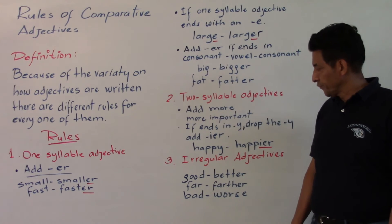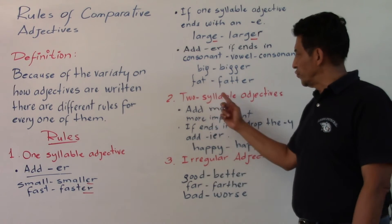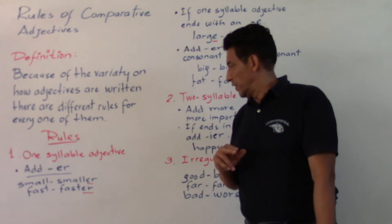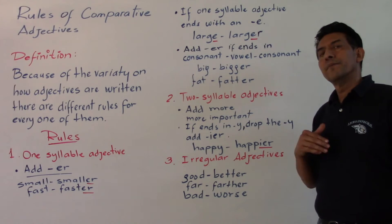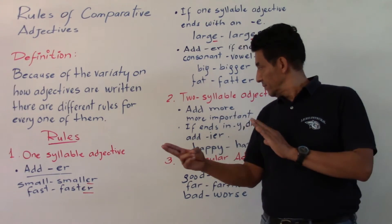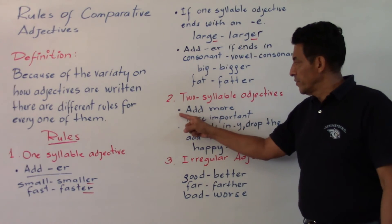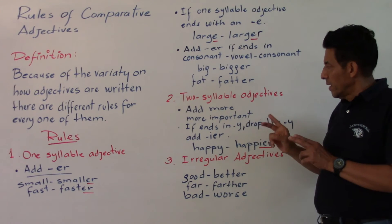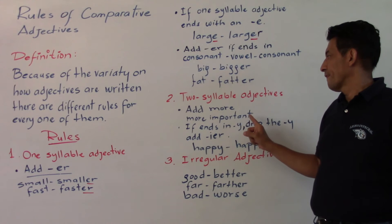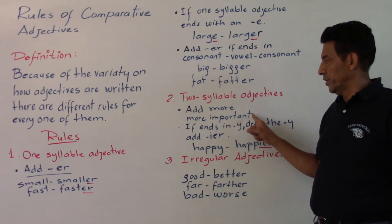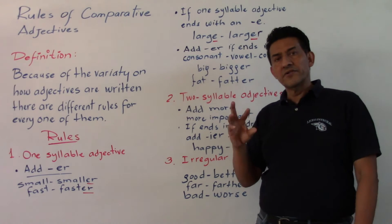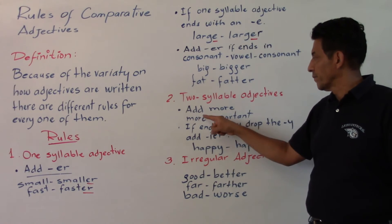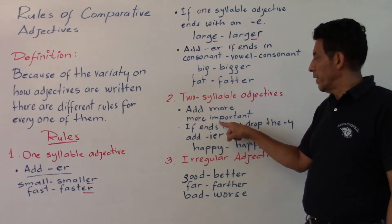The second rule covers two syllable adjectives — adjectives with two sounds. For these, we add 'more' before the adjective. For example: important → more important.